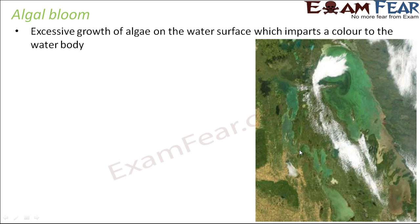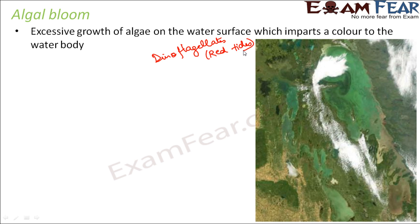The discoloration of water is caused by the presence of pigmented cells in high density. A huge amount of pigmented cells are present and their pigment gives a different color to the water. One very common algae that causes algal bloom is dinoflagellates — they are red algae and cause a bloom more popularly known as red tide. Instead of a green carpet, you see a thin red carpet on the surface of the water.